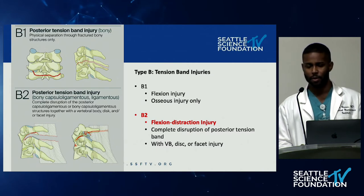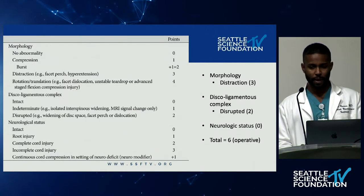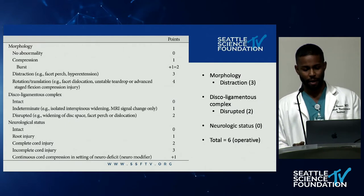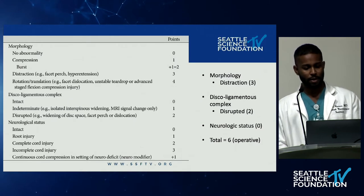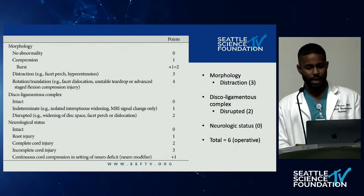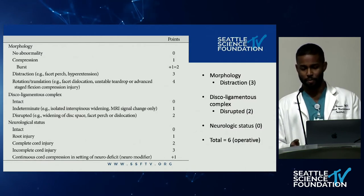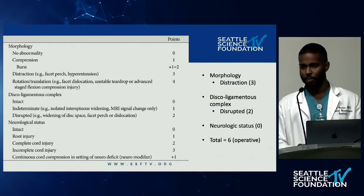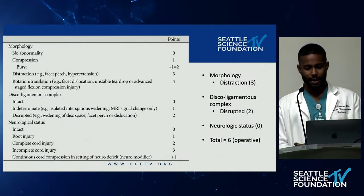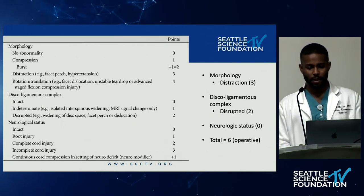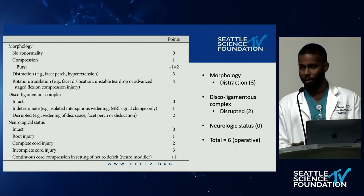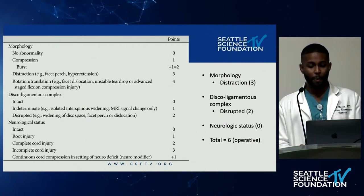We also use other ways to evaluate these injury types, including the S-LIC score. When attempting to evaluate these patients for operative care, we look at morphology, the disco-ligamentous complex, and neurologic status. This gentleman had a distraction morphology for his injury subtype — that's three points. His posterior ligamentous complex we would most likely consider disrupted, scoring that as two points, given the significant widening of the interspinous space. He's neurologically intact, so zero points for neurologic status. Overall this is six points, which would require operative care.